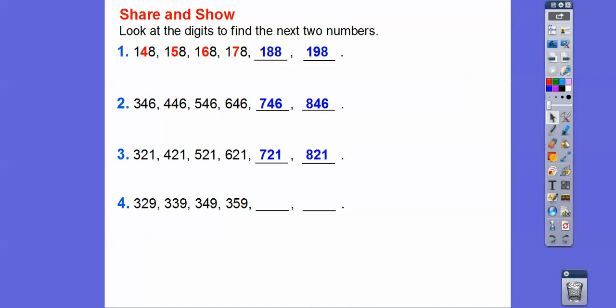What about this one? 329, 339, 349. The tens digits are repeating by 1, so this 2 becomes a 3, a 4, a 5, so this will be 359, 369, 379.